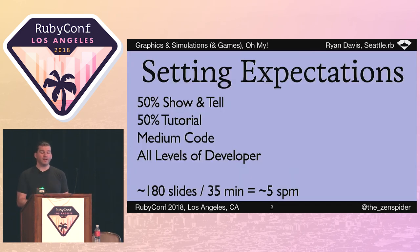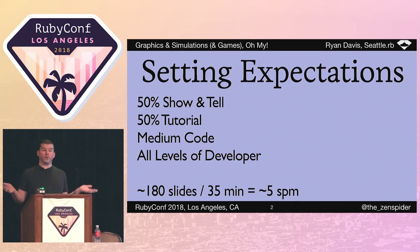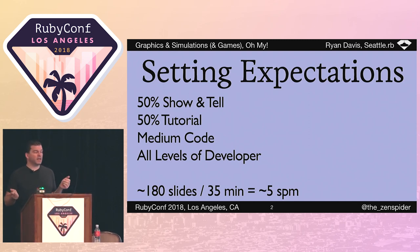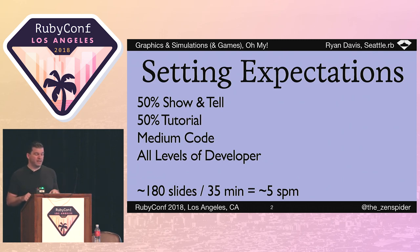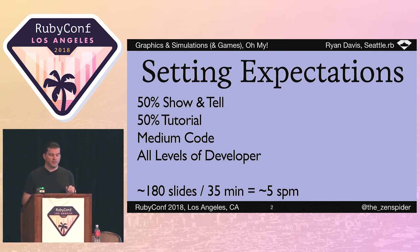Something I like to do in all my talks is to set expectations up front. This is about half show and tell, and about half tutorial. It's got a medium level of code compared to my normal talks, and it is suitable for all levels of developer. It's about 180 slides, which, if I give some time for Q&A at the end, is about five slides a minute.